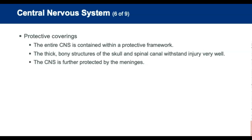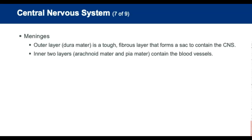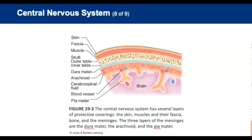The spinal cord is mostly made up of fibers that extend from the brain's nerve cells, and carries messages between the brain and the body via the gray and white matter of the spinal cord. The brain and spinal cord are covered with thick, bony structures. The central nervous system is further protected by the meninges, which are three distinct layers of tissues that suspend the brain and the spinal cord within the skull and the spinal canal. The outer layer, the dura mater, is a tough, fibrous layer that forms a sac to contain the central nervous system. The inner two layers are called the arachnoid mater and the pia mater, and they contain the blood vessels that nourish the brain and spinal cord.